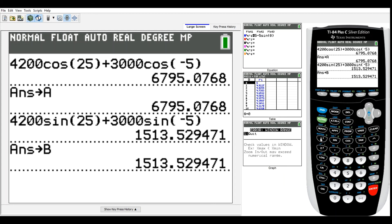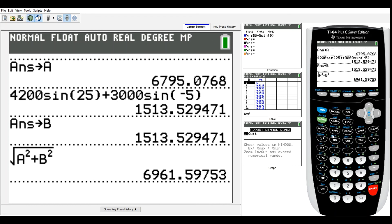And so the next calculation that we had done after this was we found the magnitude of our vector, which was just the square root of A squared plus B squared. So we have 2nd, square root, we have alpha A squared plus alpha B squared. And there's that 6,961.6 if we round to the nearest tenth.